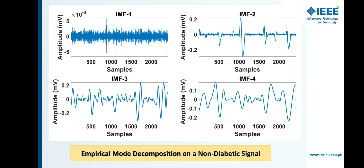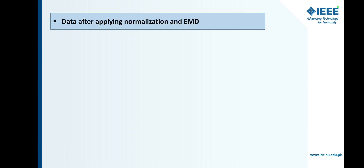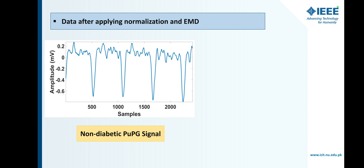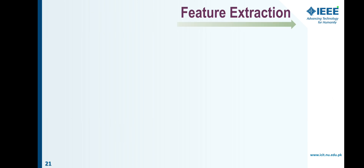Here is IMF1 of a non-diabetic signal. As you can see, IMF1 is of high frequency, meaning it contains excess noise. To remove noise from the signal, we discard IMF1, and the rest of the signal is reconstructed by adding all remaining IMFs. Here we can see EMD applied on a non-diabetic signal, and here is EMD on the diabetic signal. The non-diabetic and diabetic pulse plethysmograph signals after normalization and EMD are shown here.